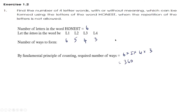By the Fundamental Principle of Multiplication, the required number of ways is 6 into 5 into 4 into 3, which is equal to 360 ways. So the number of ways in which these 4-letter words can be formed using the letters of the word HONEST without repetition of letters is 360.